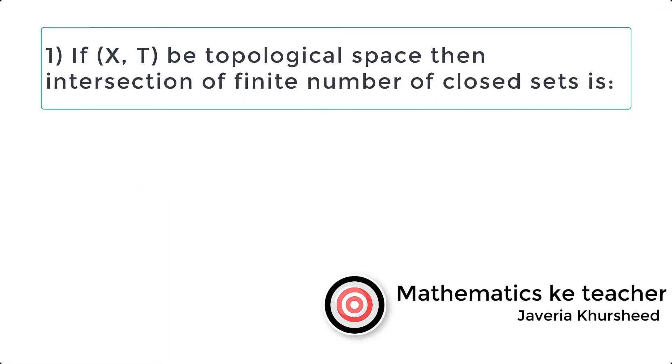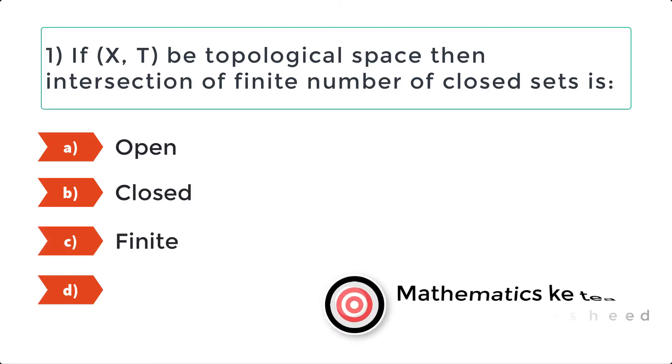Question 1: If X, T be topological space then intersection of finite number of closed sets is. Options: A. Open, B. Closed, C. Finite, D. Infinite.